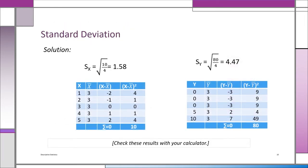For data set x, the deviations are minus 2, minus 1, 0, plus 1 — notice they add up to zero. We square those deviations to get the sum of squares, which is 10. Dividing by n minus 1 (which is 4) and taking the square root gives the square root of 2.5, which is 1.58. So the standard deviation for x is 1.58.